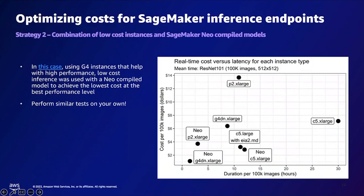The second strategy is using a combination of low-cost instances and compiled models, using tools such as SageMaker Neo. SageMaker Neo enables developers to optimize machine learning models for inference on cloud instances to run faster with no loss in accuracy. By comparing different instances using Inference Recommender to rightsize, and running custom load tests to identify the right patterns, you can benchmark and choose the right instances. Using compiled models with the right set of instances lowers your costs.